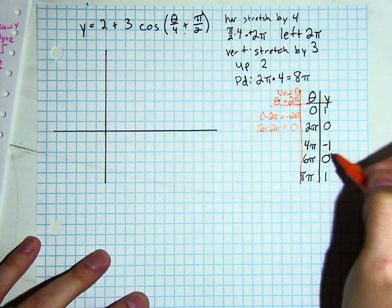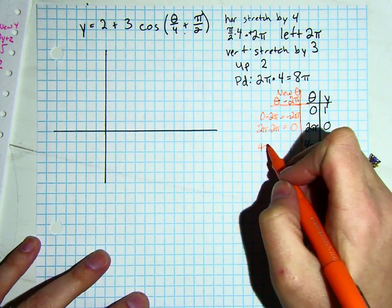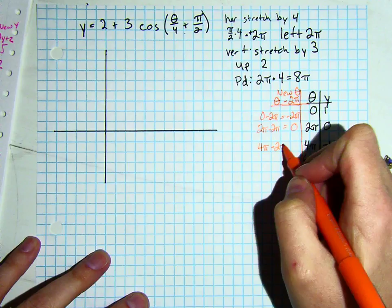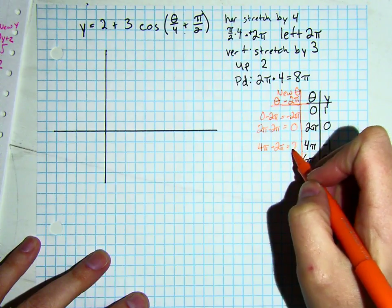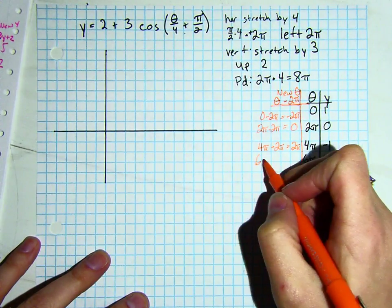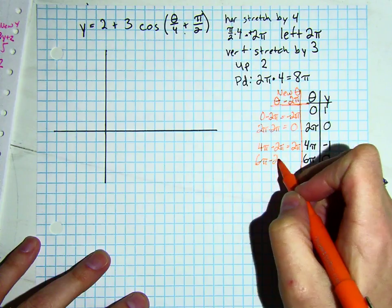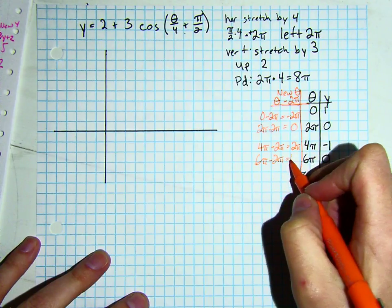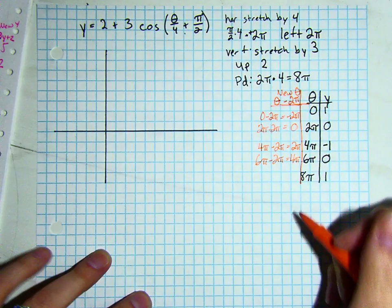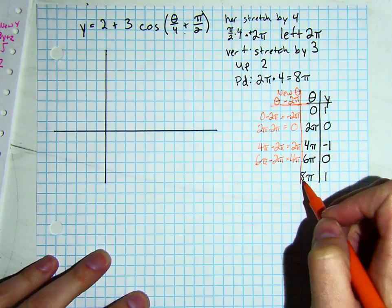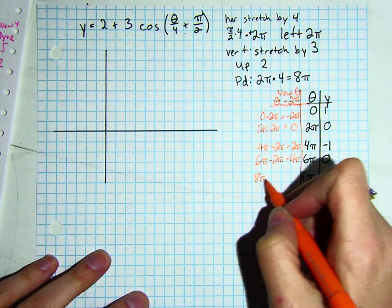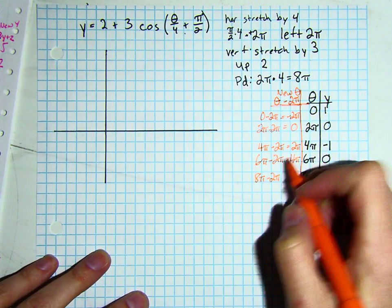I have 4 pi minus 2 pi, which will be 2 pi. 6 pi minus 2 pi is 4 pi. And last, I have 8 pi minus 2 pi, which will give me 6 pi.